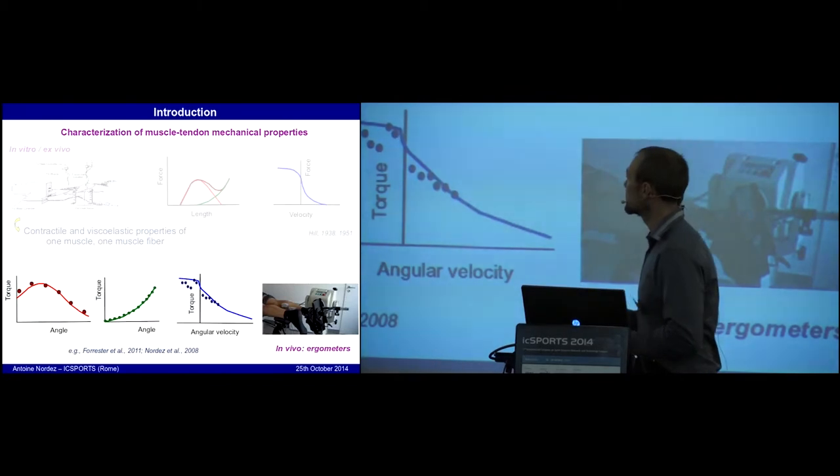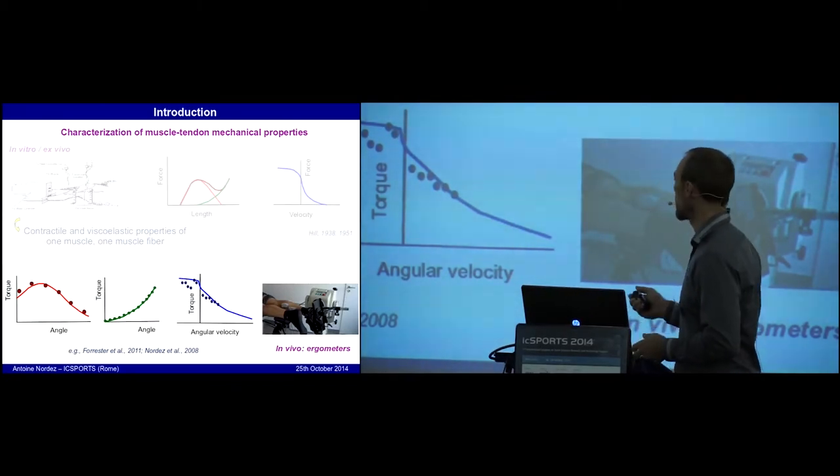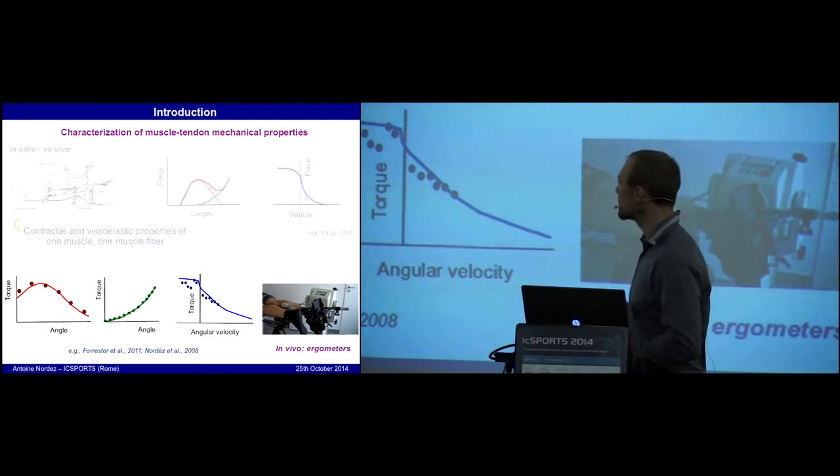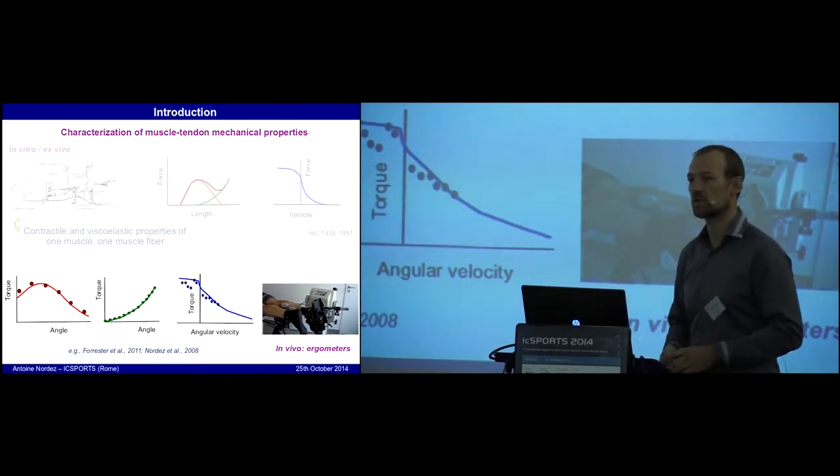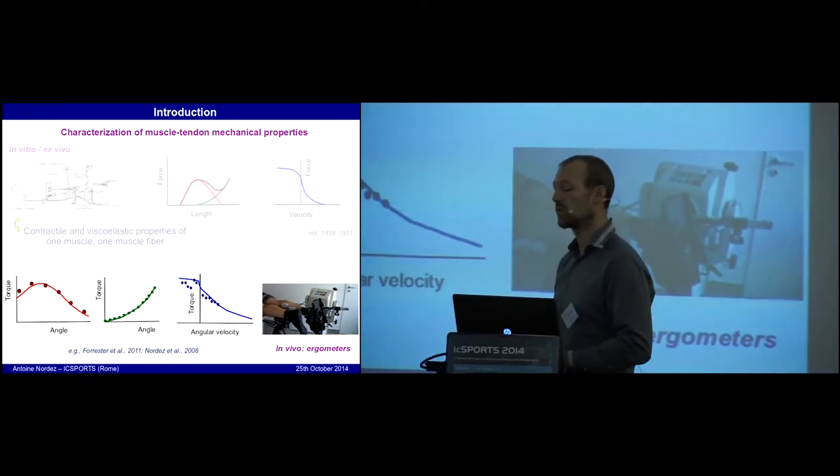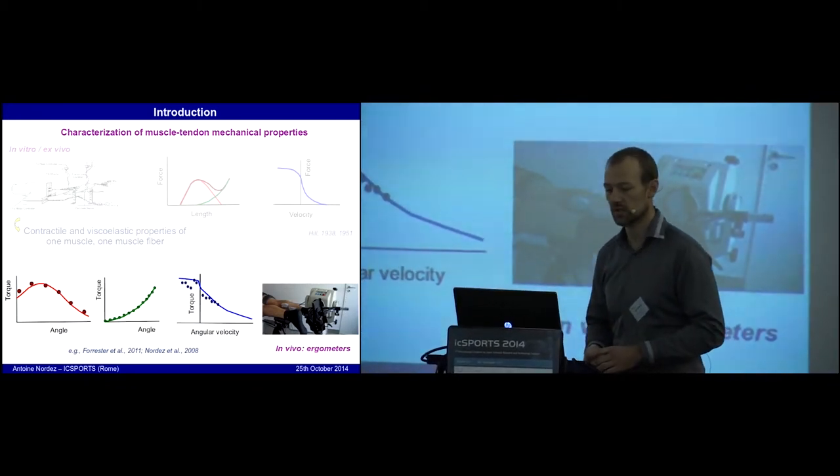That's why we need the same kind of method to analyze the properties of muscles in vivo, and for that purpose we can use ergometers. Ergometers are well used to obtain, for instance, the torque-angle relationship in active and passive conditions and also the torque-velocity relationship. These relationships are classically considered as analogous of the force-length and force-velocity relationships.